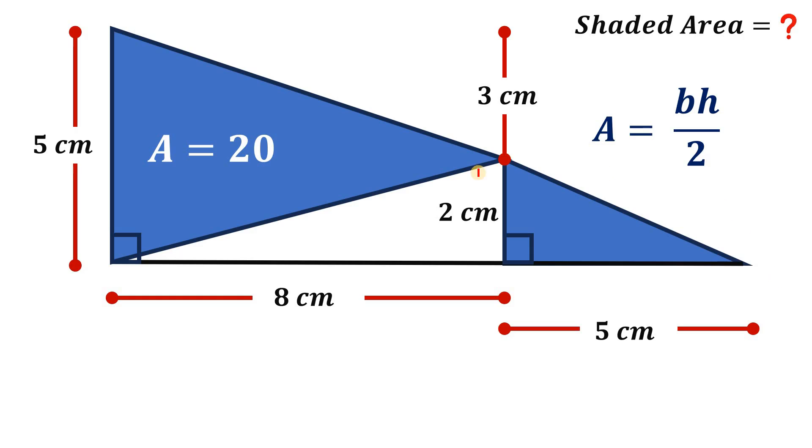Now how about the area of this triangle? So we have 5 times 2. We have the base 5, the height 2, then divided by 2. 5 times 2 is 10 divided by 2 simply equal to 5 square centimeters.